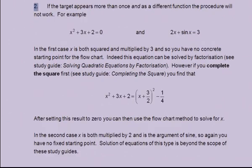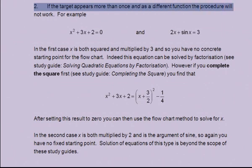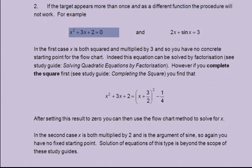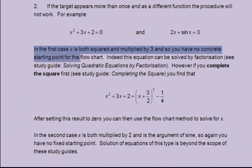Limitation 2. If the target appears more than once and as a different function, the procedure will not work. For example, x² + 3x + 2 = 0. And 2x + sin(x) = 3. In the first case, x is both squared and multiplied by 3, and so you have no concrete starting point for the flow chart. Indeed, this equation can be solved by factorization, see study guide Solving Quadratic Equations by Factorization. However, if you complete the square first, see study guide Completing the Square, you find that x² + 3x + 2 equals (x + 3/2)² - 1/4.